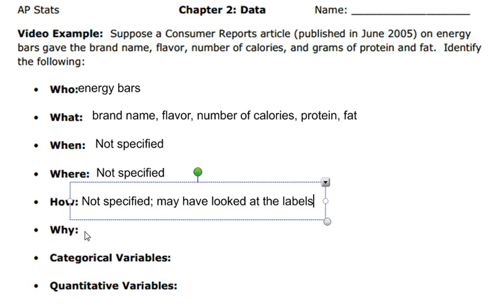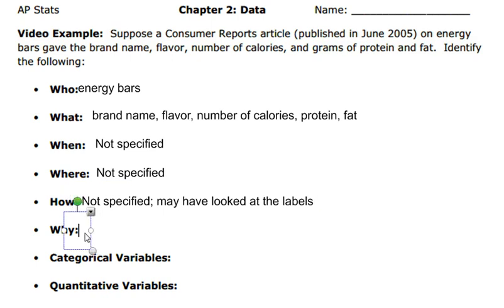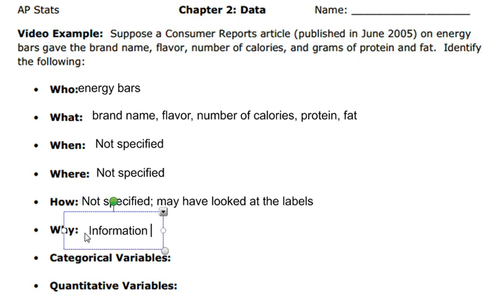The why — you are going to give an educated guess. So why would they come up with a listing of the brand name, the flavor, number of calories, grams of protein, and the fat? I would think that they would do this for potential customers — they're giving information for potential customers.